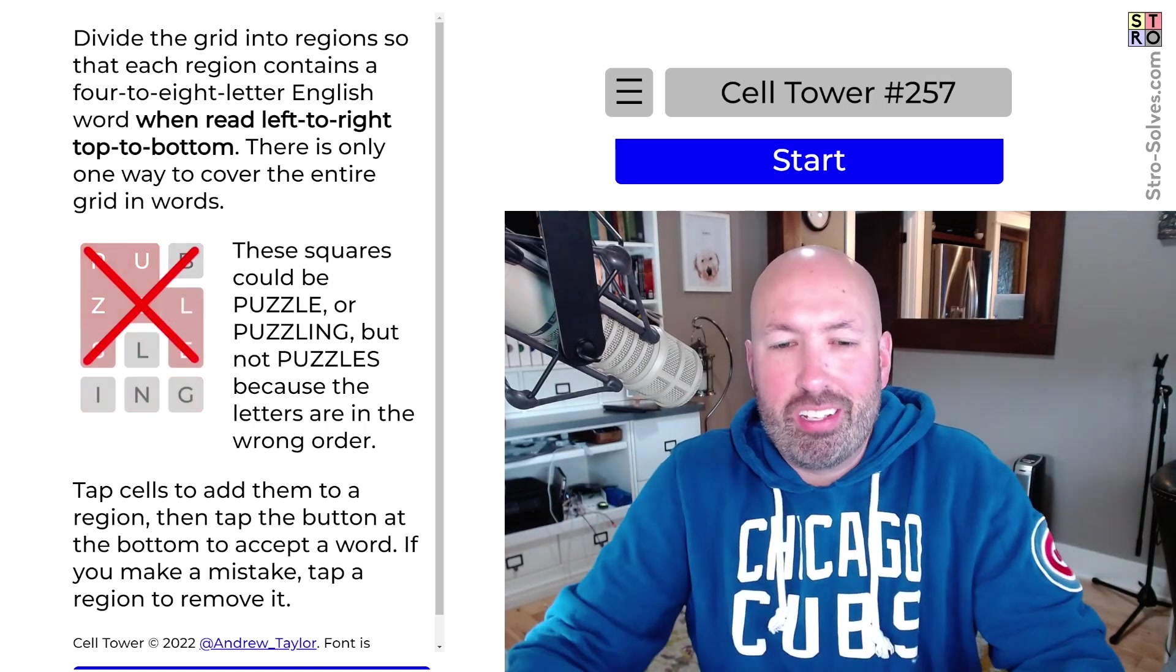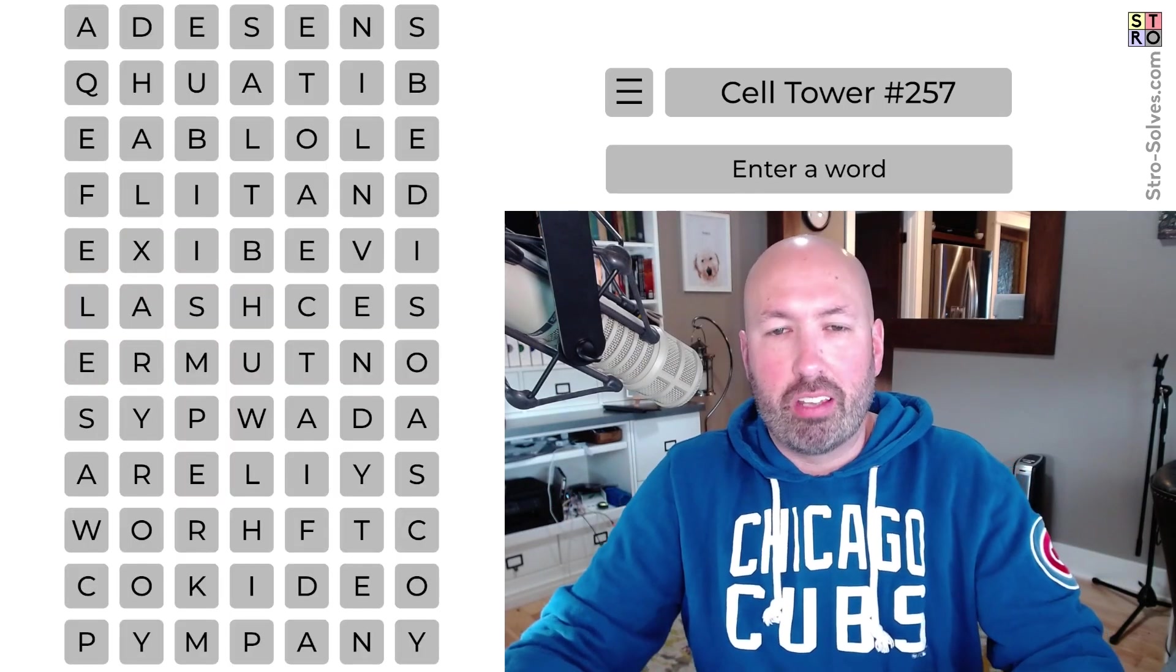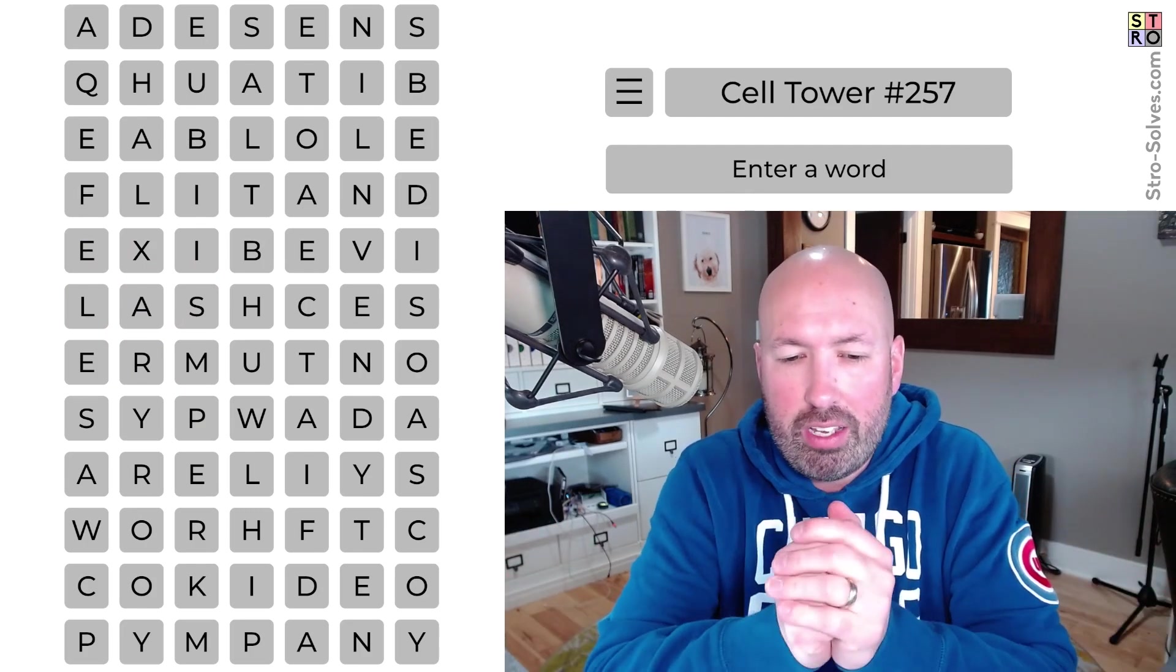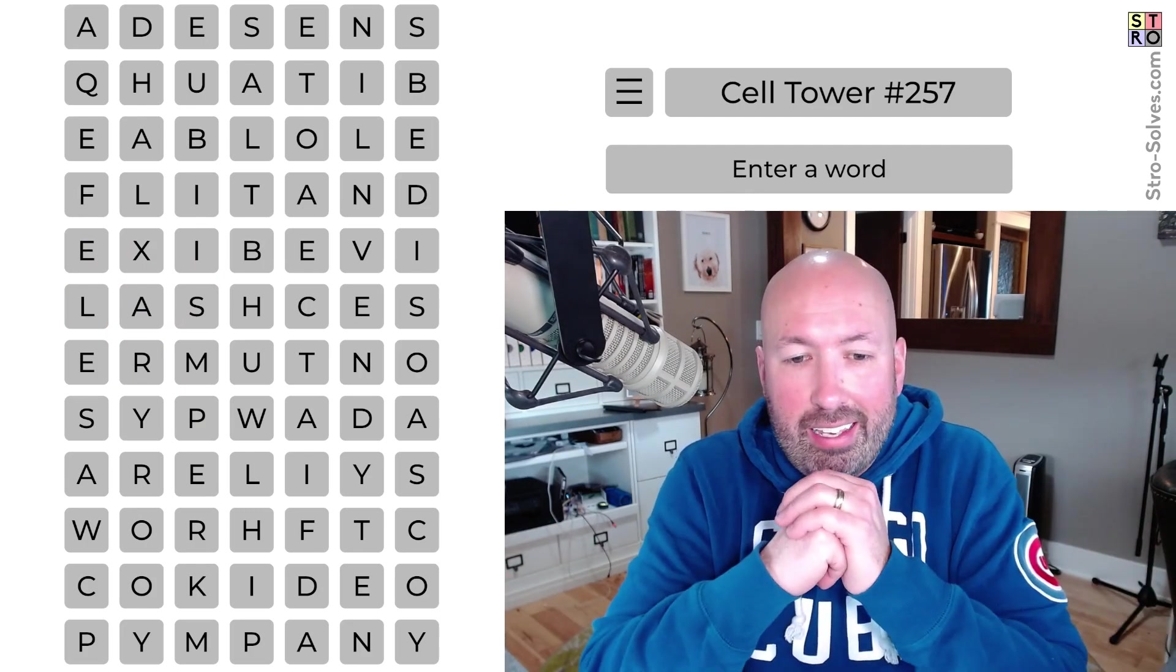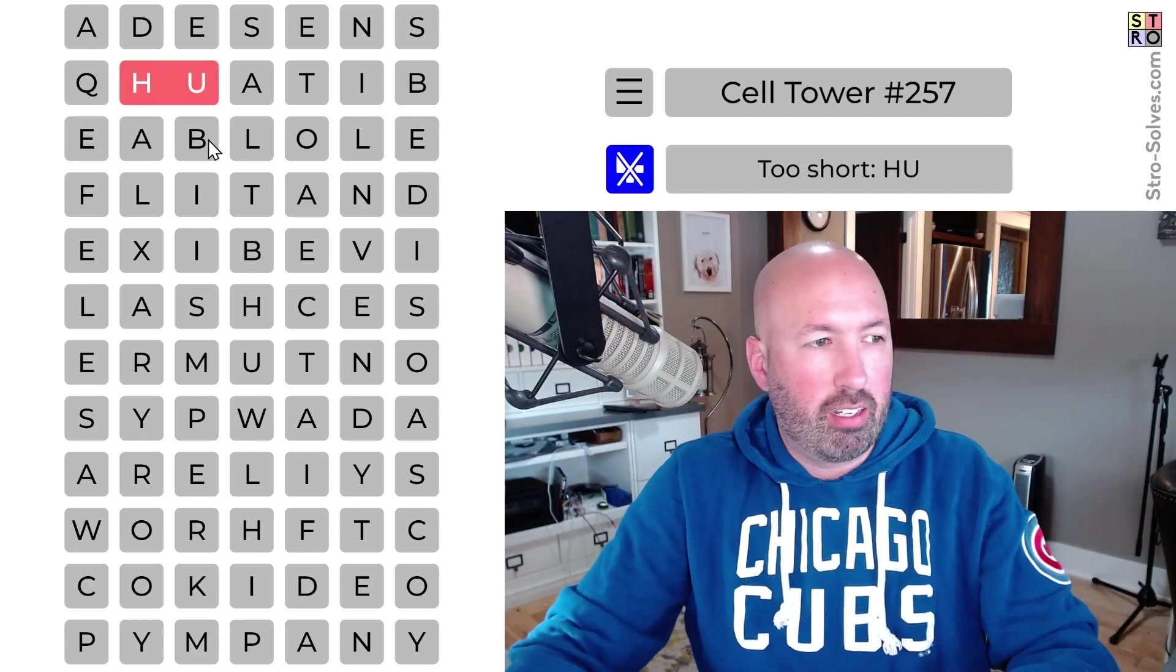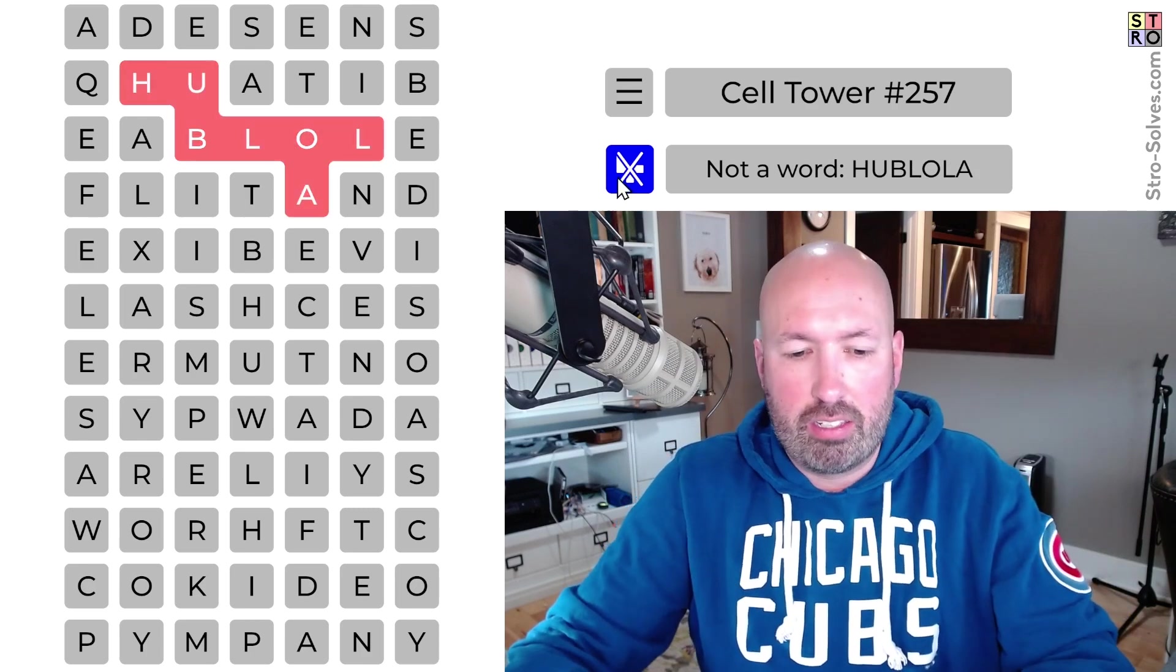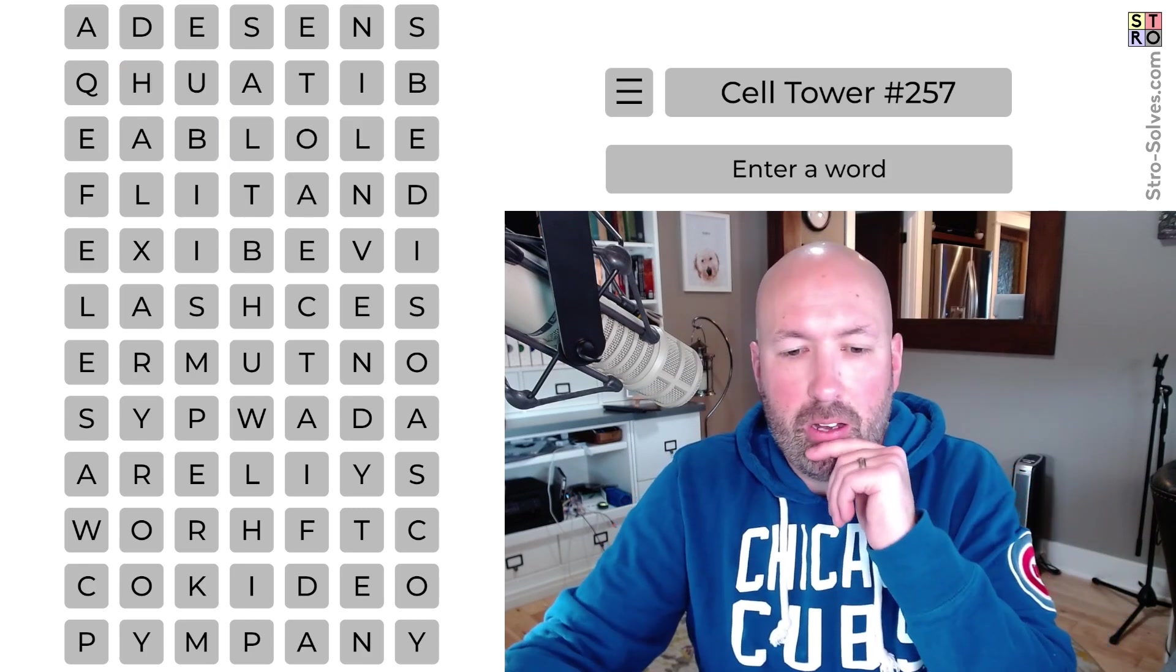All right, I'm looking at another cell tower today. I've known one of these for a few days. If you're not familiar with cell tower, it's like a word search and you're trying to use every letter in the grid in one of the words. You can look right above me there as I click and drag on the letters. It'll show you the order that it's connecting things in case you're confused at all. And that's about all we need to know.